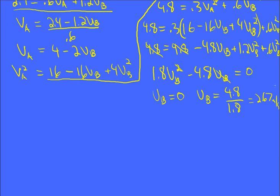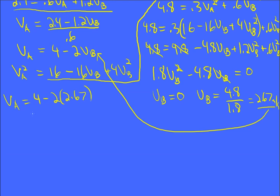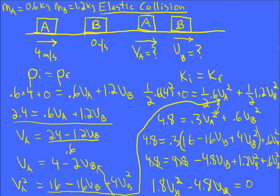What about A? Well, now it's easy. I can just take this and put it into here and get VA is 4 minus 2 times 2.67. You can see that's going to come out negative. And so VA actually bounces back after the collision.